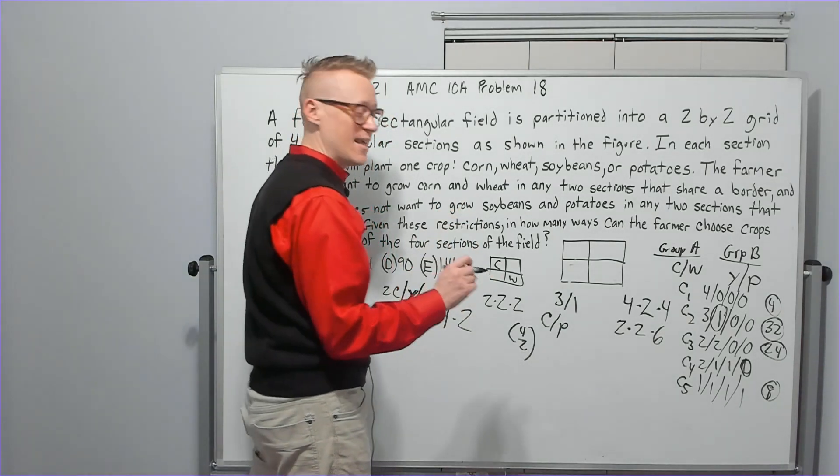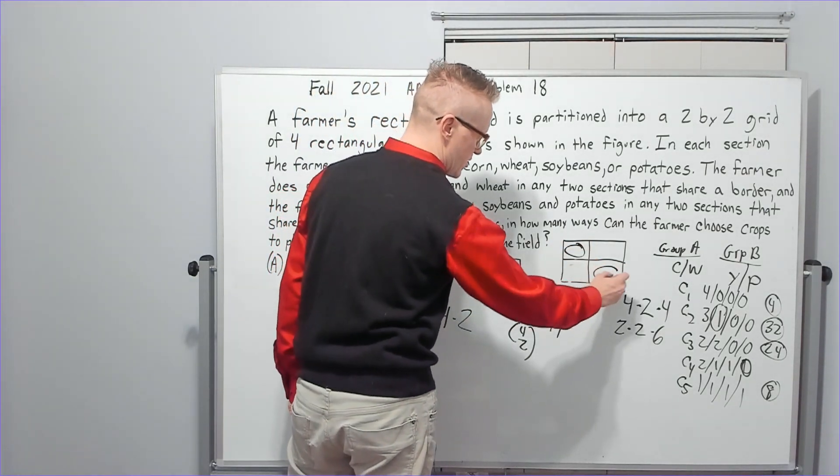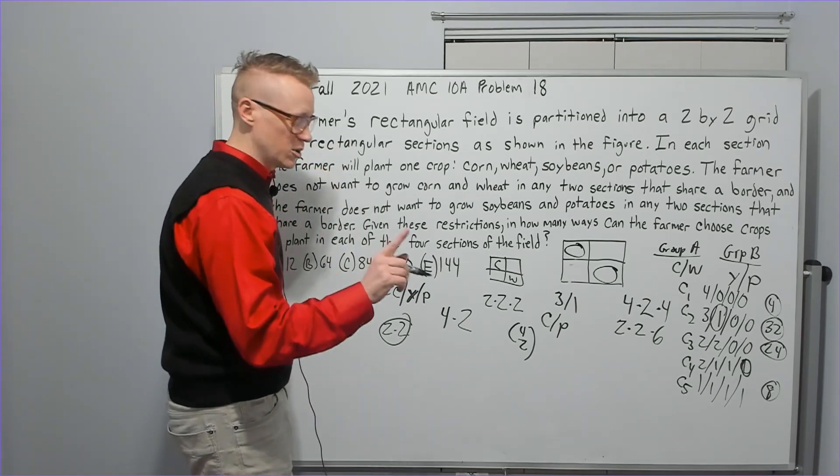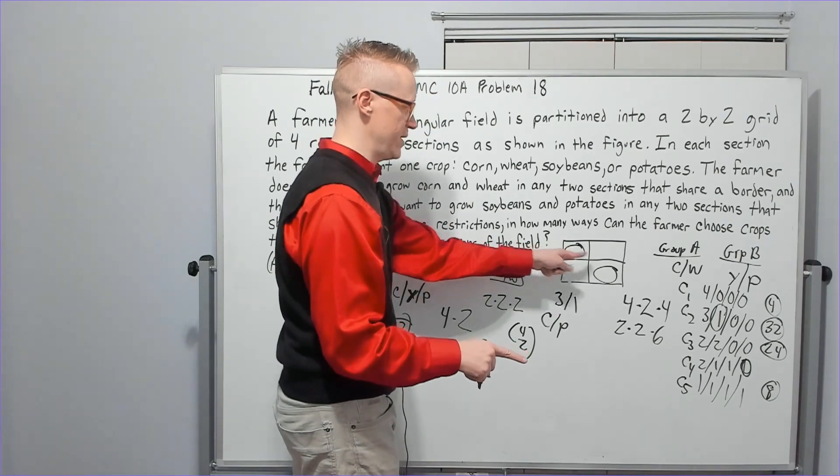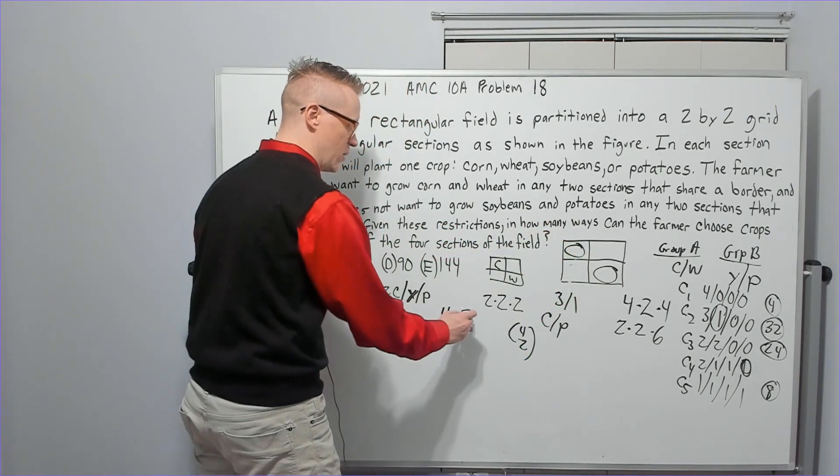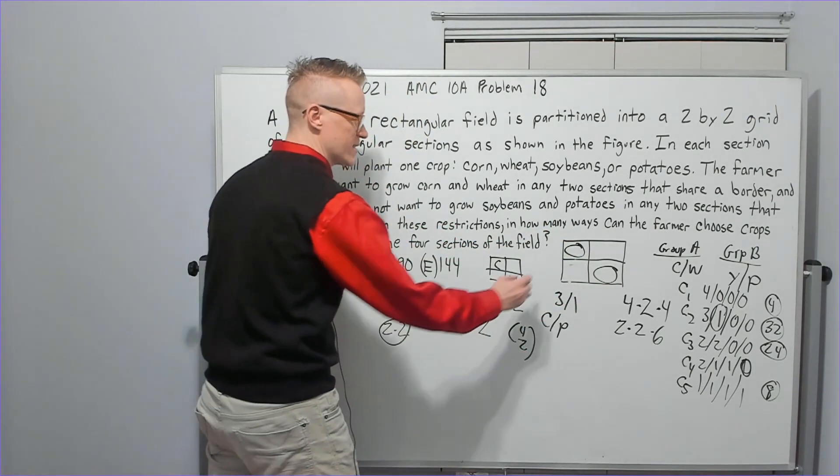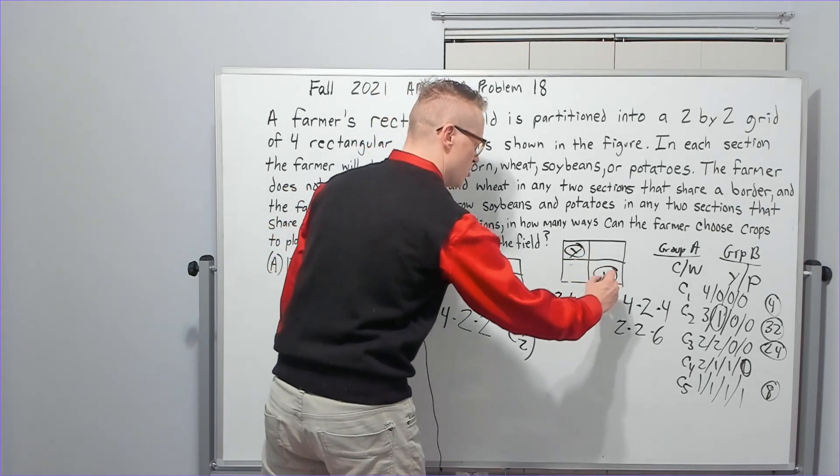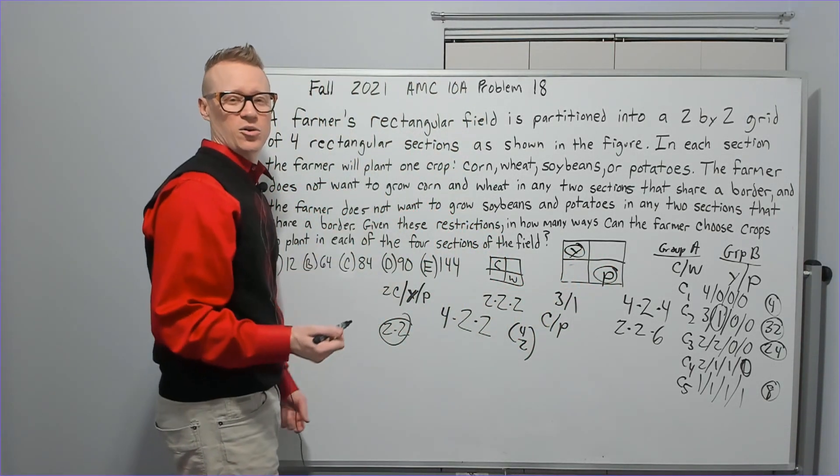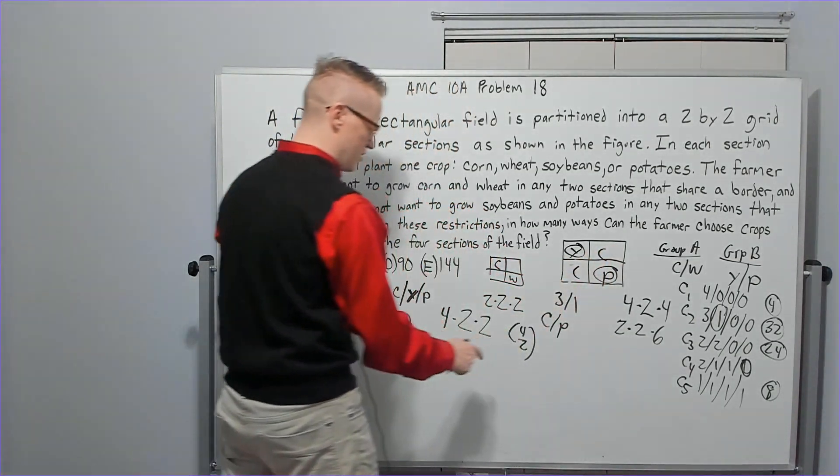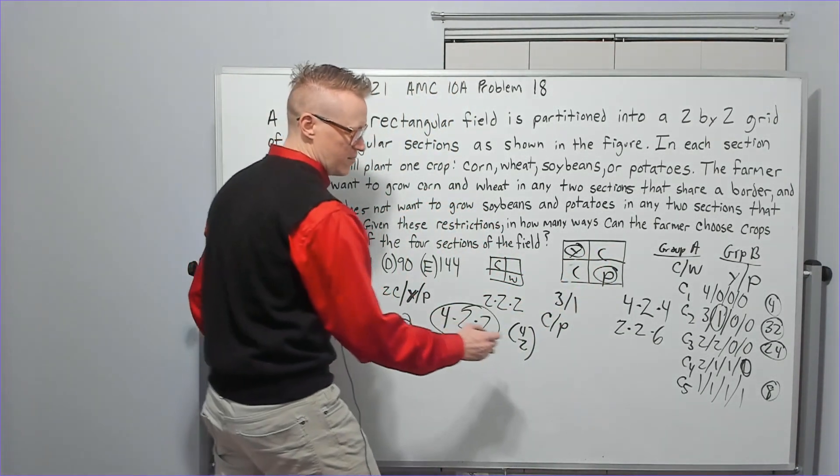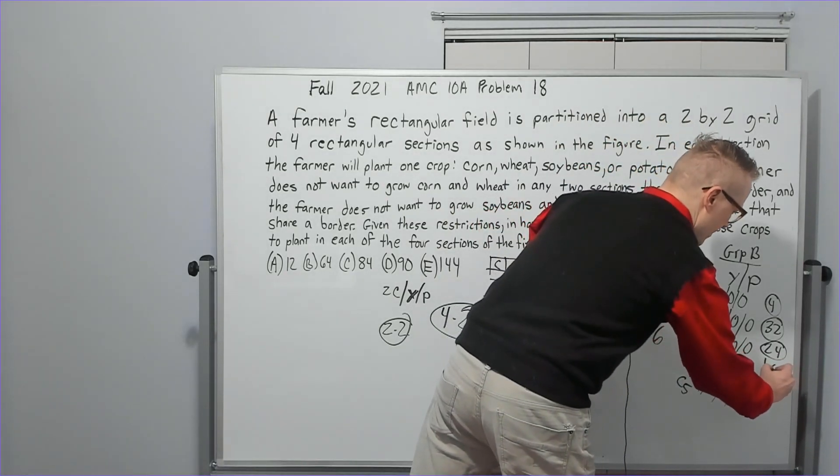Once I've made that choice, say I chose this one and this one, you have two arrangements of the soybeans and the potatoes. I could put Y here, P here, or P here, Y here. Same thing, right? Two ways. Now, once I've placed those, do I get to really place the corn? No, it's whatever's left. That's corn now. And so this is it: four times two times two. This came out to be 16.